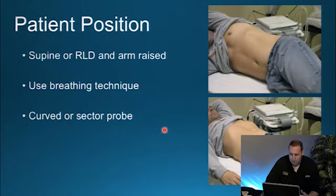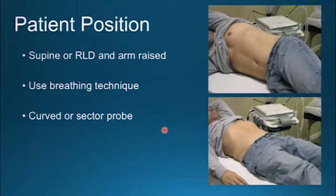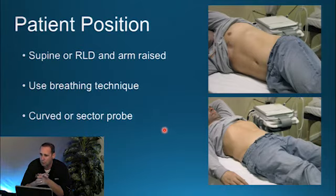Patient position: there are two main positions — supine and right lateral decubitus, with the arm raised in both positions. Right lateral decubitus is ideal, but many patients in the ICU or CCU cannot be positioned that way, so supine works as well — just get the left arm up by their head. Equally important is breathing technique: ask the patient to take a deep inspiration and hold it, which fills the lungs, pushes the diaphragm down, and helps visualize the left kidney and the spleen.